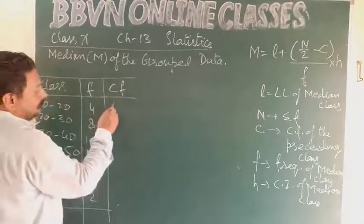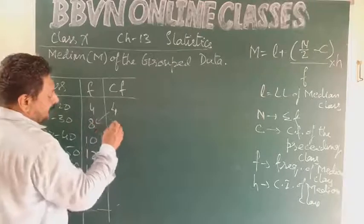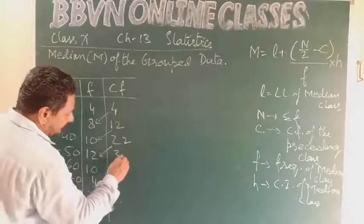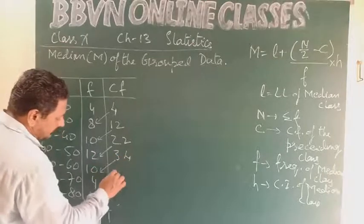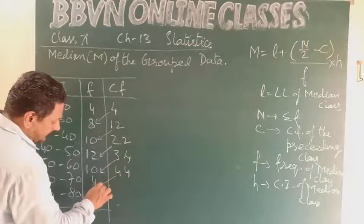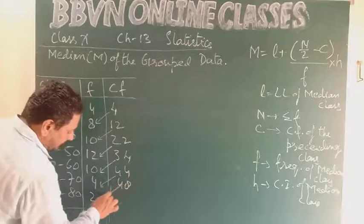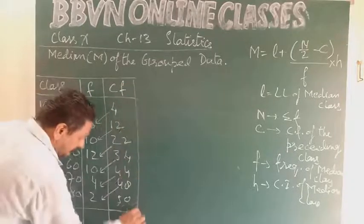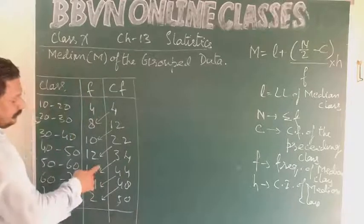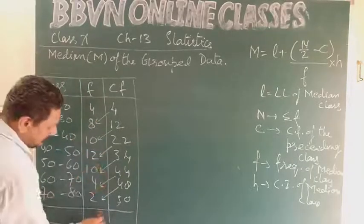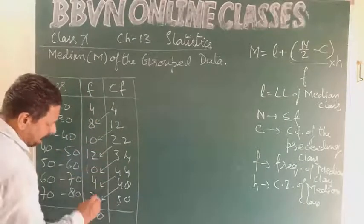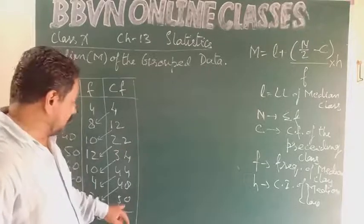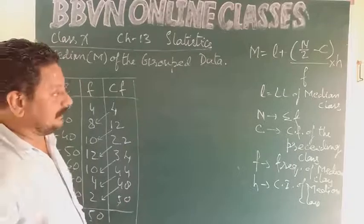4. Now 4 plus 8 equals 12. 12 plus 10 equals 22. 22 plus 12 equals 34. 34 plus 10 equals 44. 44 plus 4 equals 48. 48 plus 2 equals 50. So the last entry in the cumulative frequency column should be equal to sum of the frequencies. This is capital N.